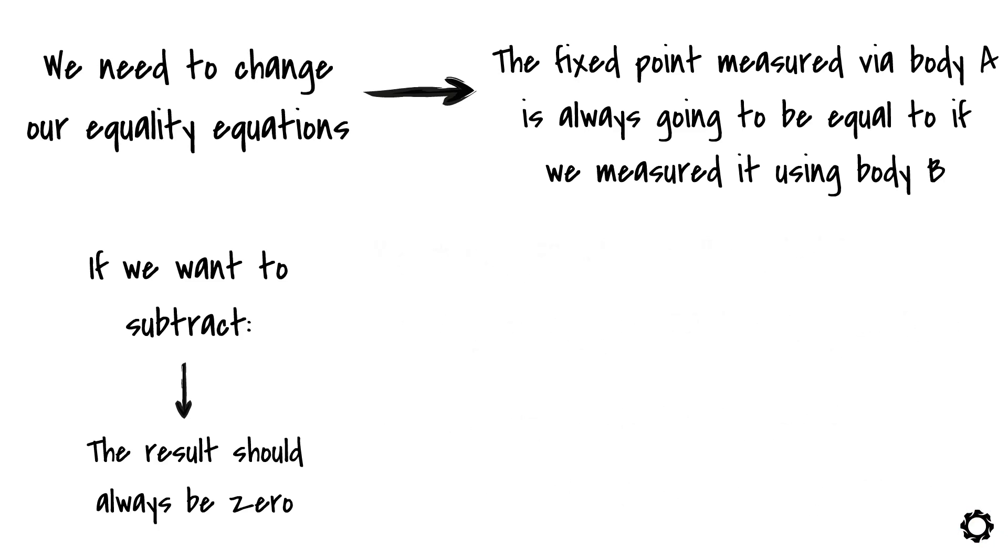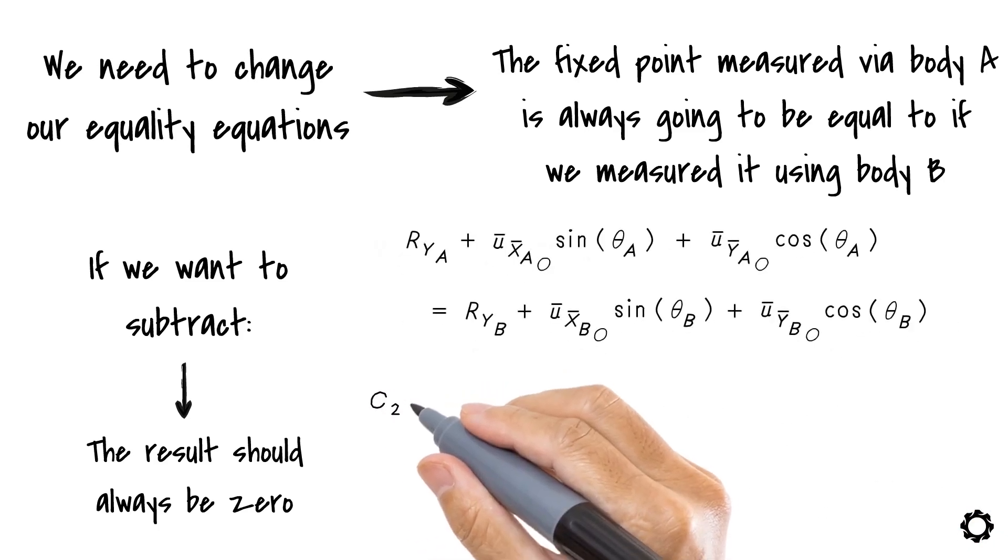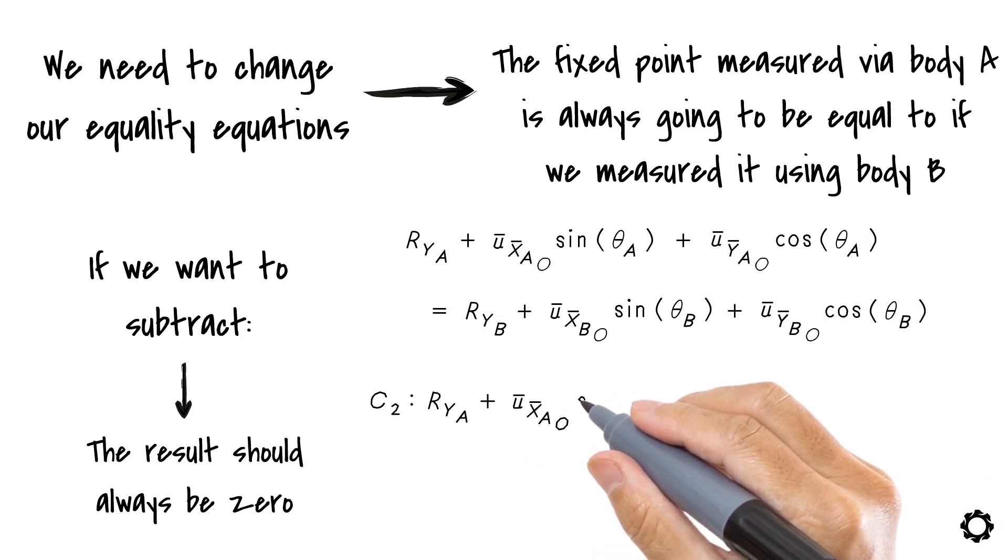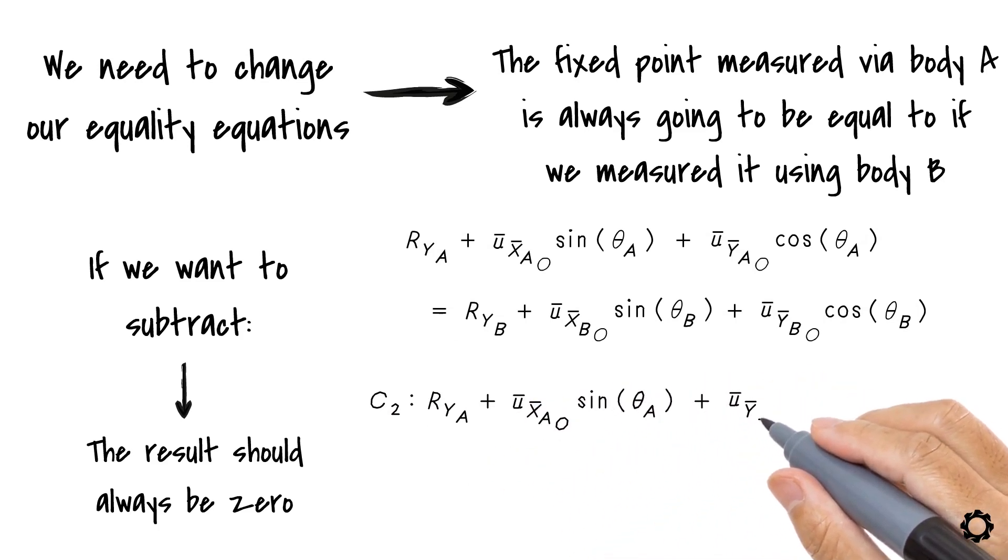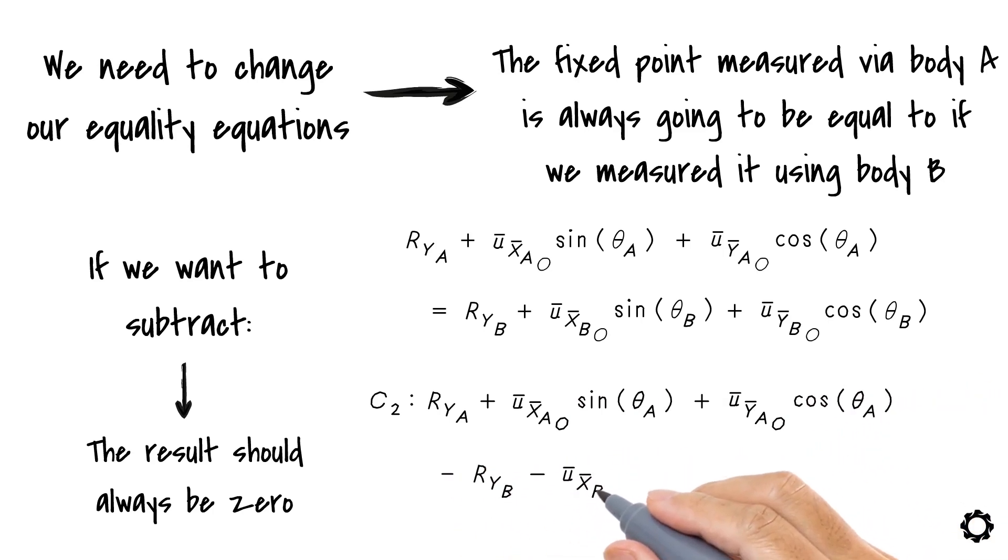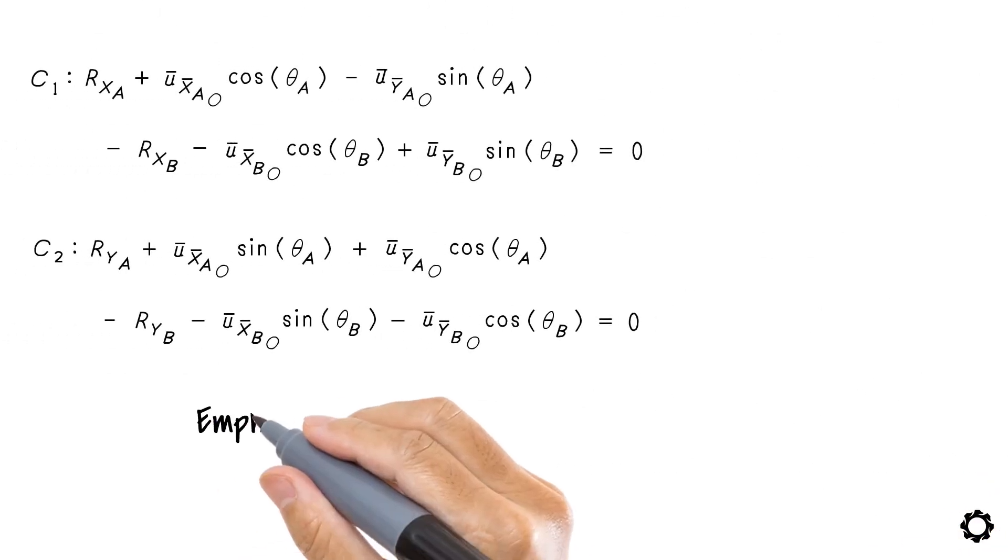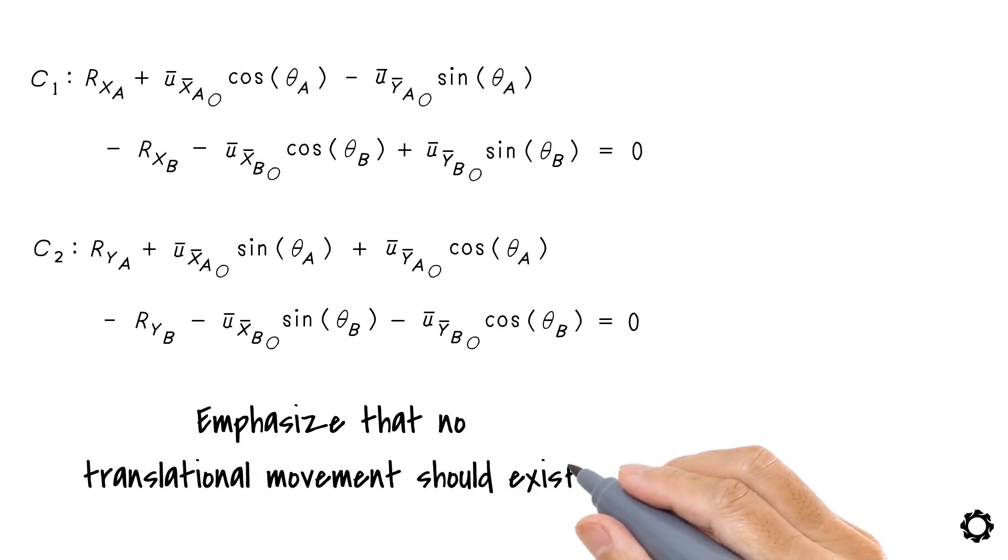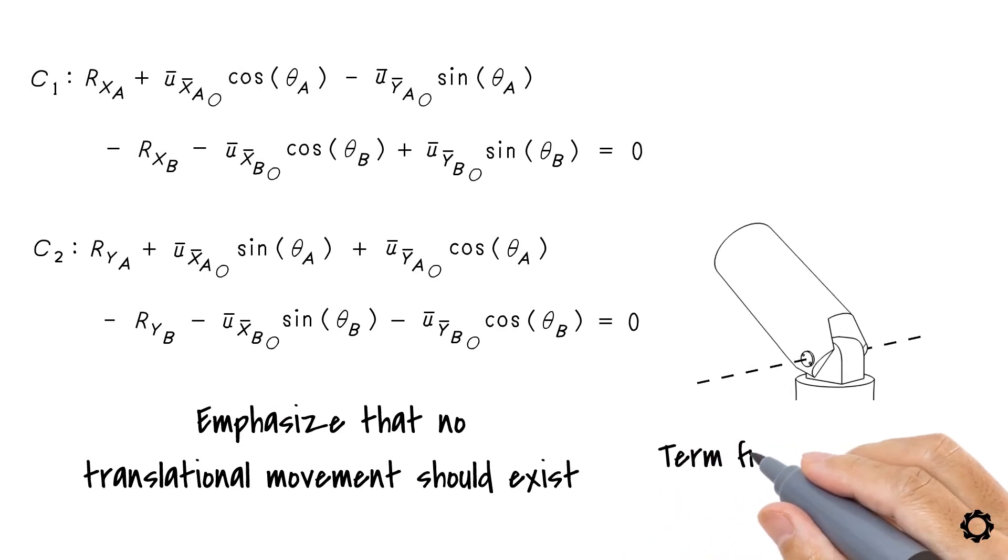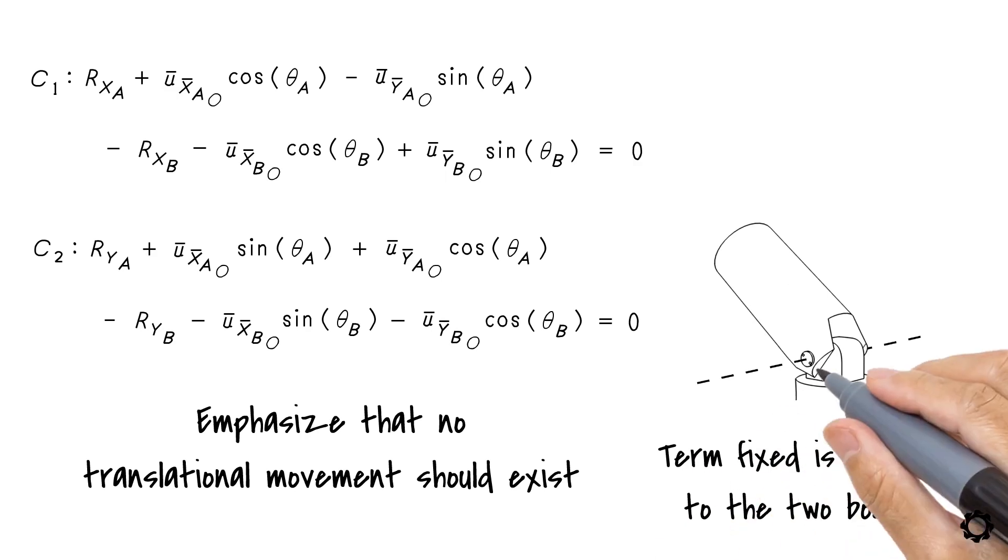The same applies with the Y component. Simply said, these two constraints emphasize that no translational movement should exist between the two bodies in a revolute joint. Only a rotation around this fixed point is possible. Remembering that term fixed is relative to the two bodies where the constraint is acting.